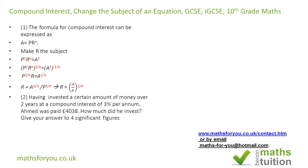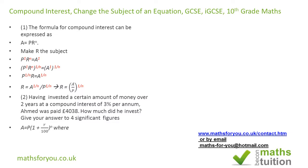For part 2, the question says: having invested a certain amount of money over 2 years at compound interest of 3% per annum, Ahmed was paid £4,038. How much did he invest? Give your answer to 4 significant figures. The formula for compound interest is A equals P times (1 plus R over 100) all raised to the power N.